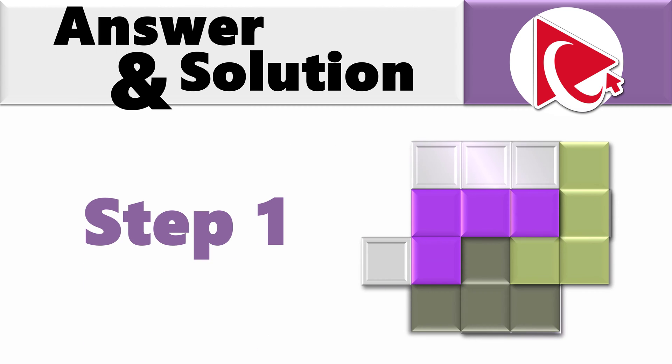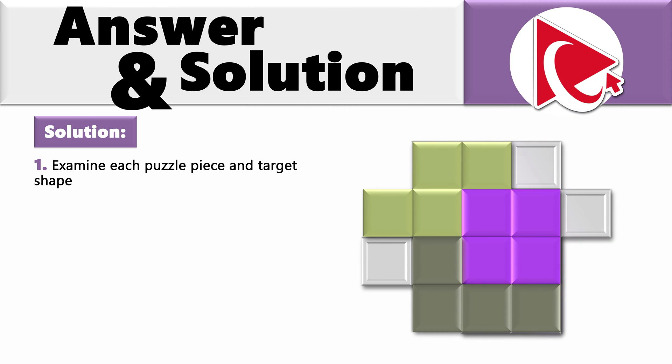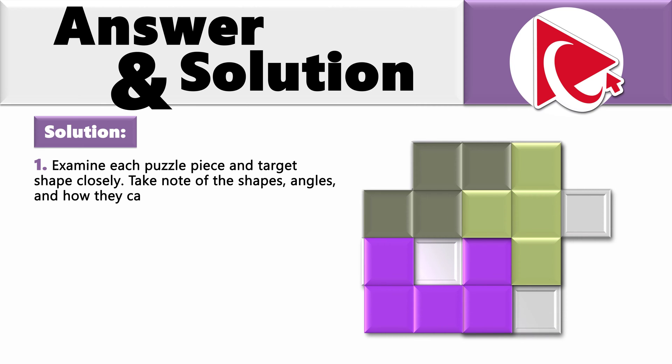Step 1. In this problem, we have a target shape and three puzzle pieces for each answer. In step 1, we need to examine each puzzle piece and target shape very closely. Make sure you take note of all the shapes, angles, and how they can potentially fit together.